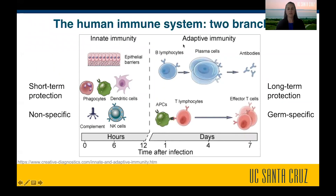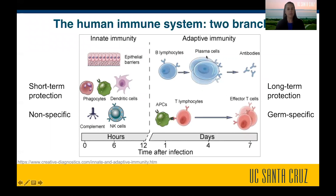The other branch of our immune system is called adaptive immunity. This kind of immunity can take days and weeks to develop, so it's a slowly developing side of our immunity. However, this immunity can give us long-term protection — and sometimes lifelong protection — against reinfection by that infectious disease. The adaptive immunity is very germ- or pathogen-specific. When you're infected with a virus, your adaptive immunity is specific for that virus and will protect you against that virus in the future.